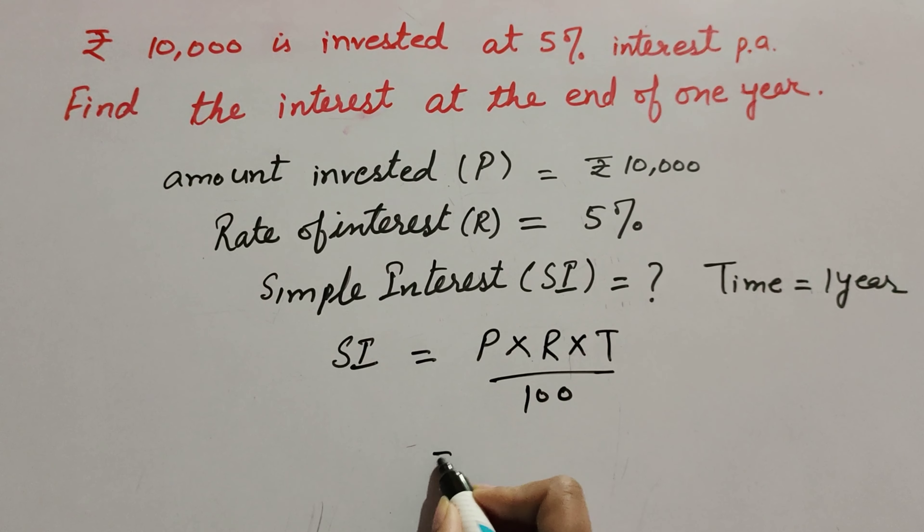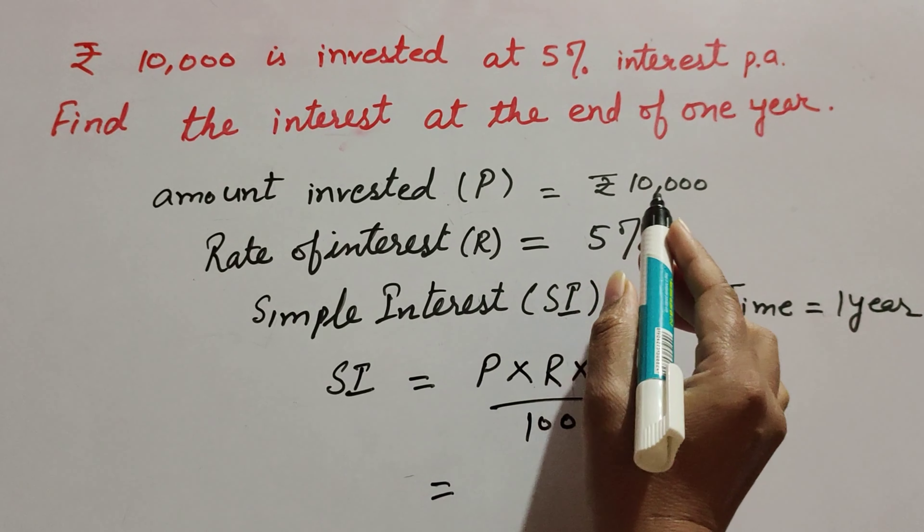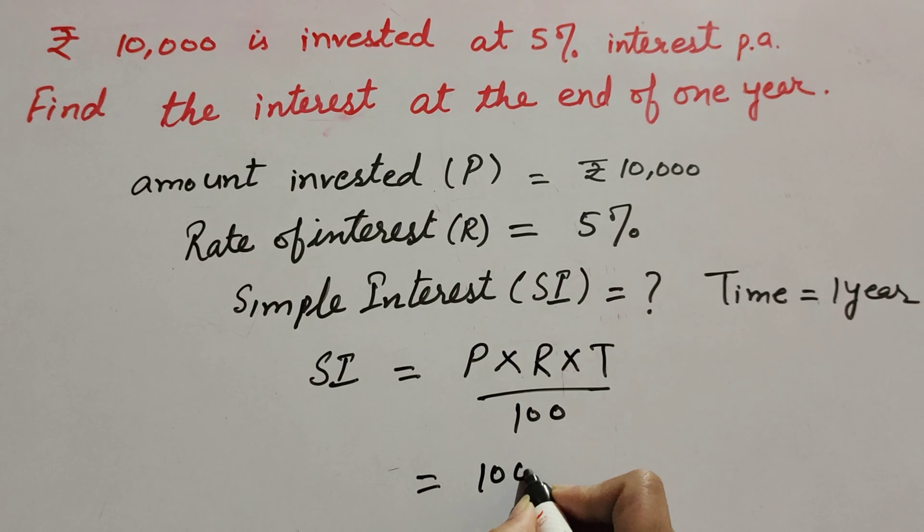We use this formula to find the simple interest. P is principal, rupees 10,000. R is rate of interest, 5%. Time is 1 year. So SI equals (10,000 × 5 × 1) / 100.